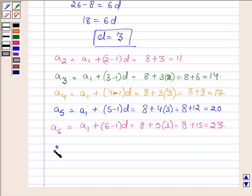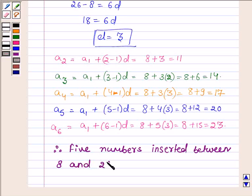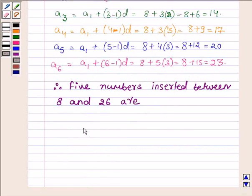Therefore, 5 numbers inserted between 8 and 26 are 11, 14, 17, 20, and 23.